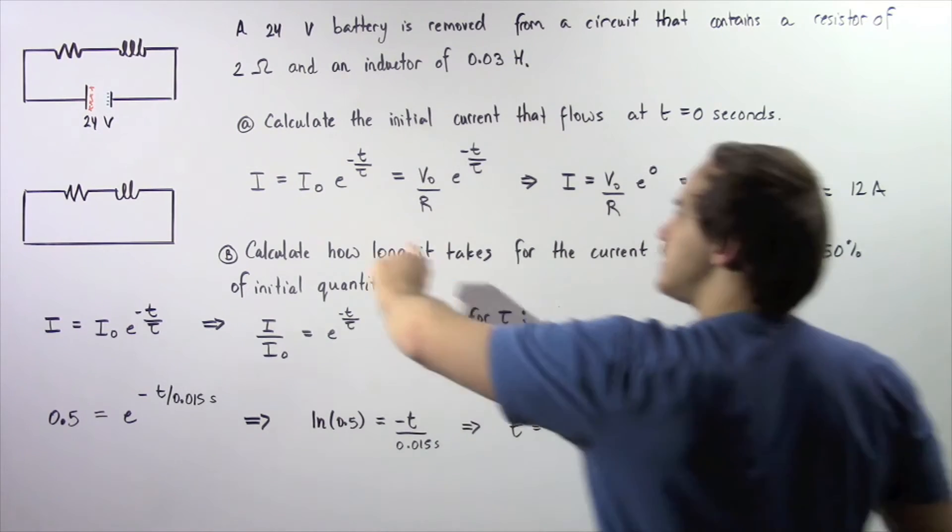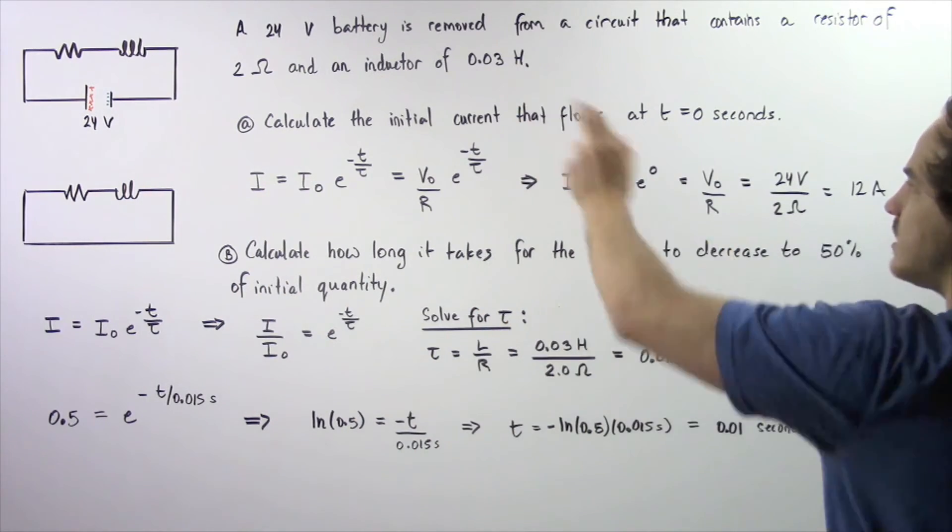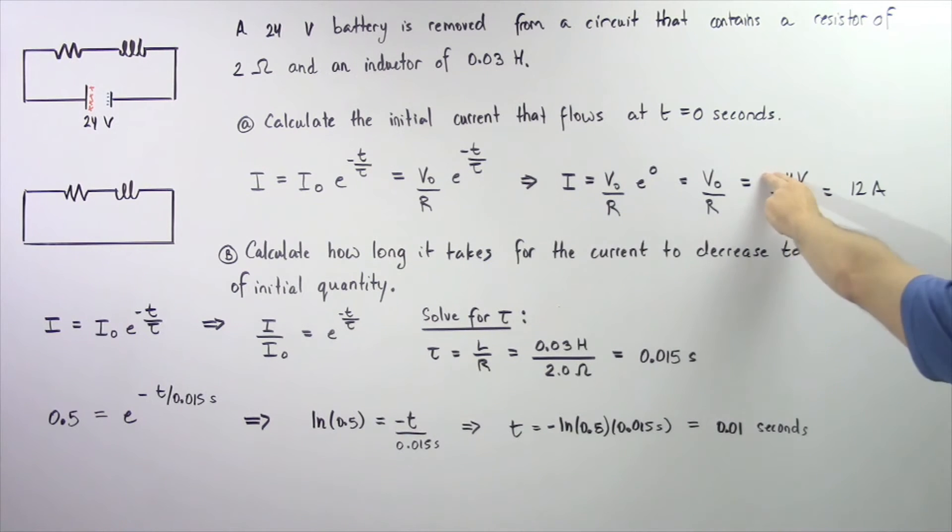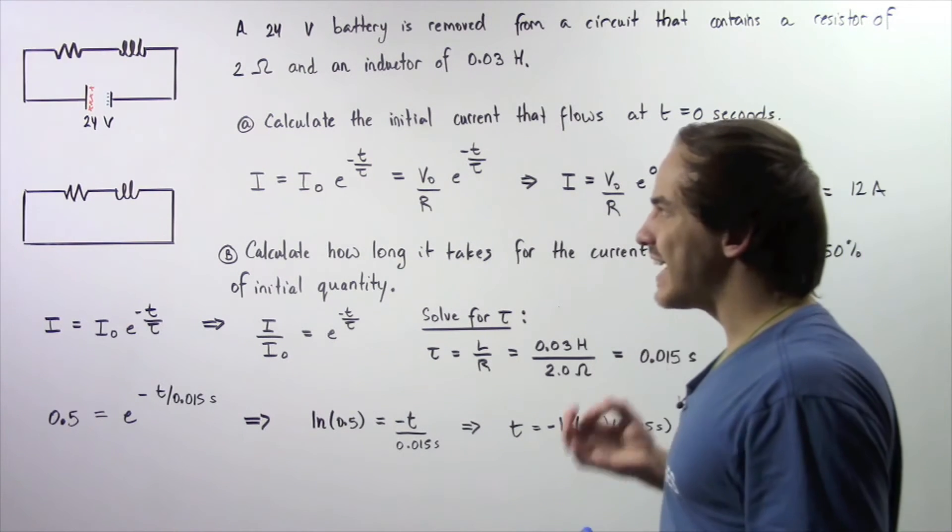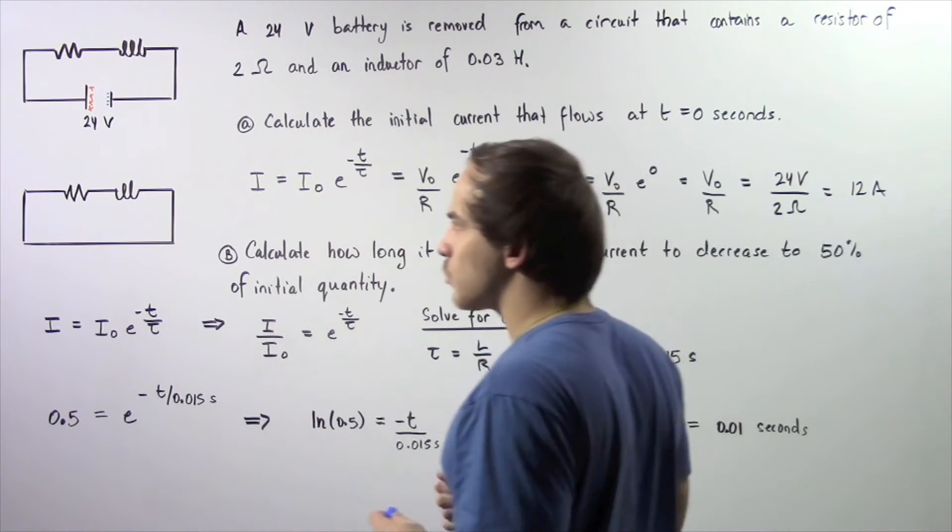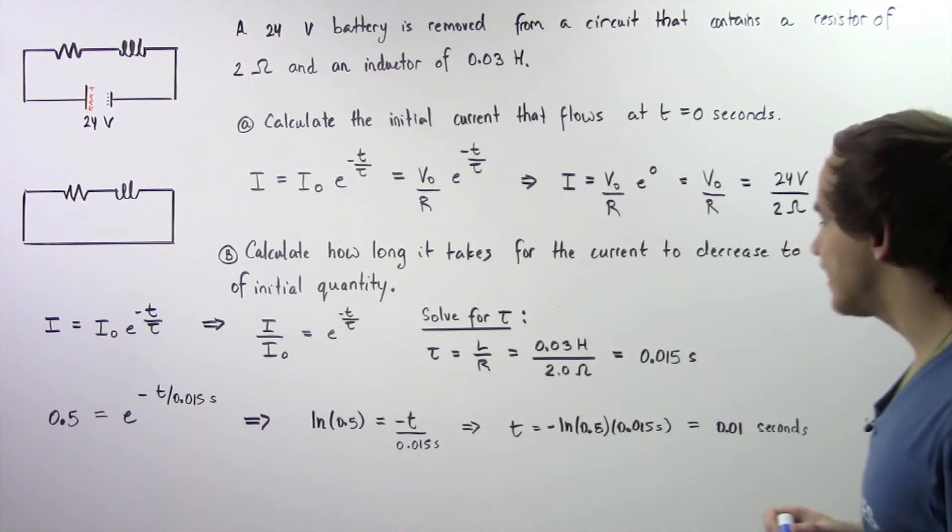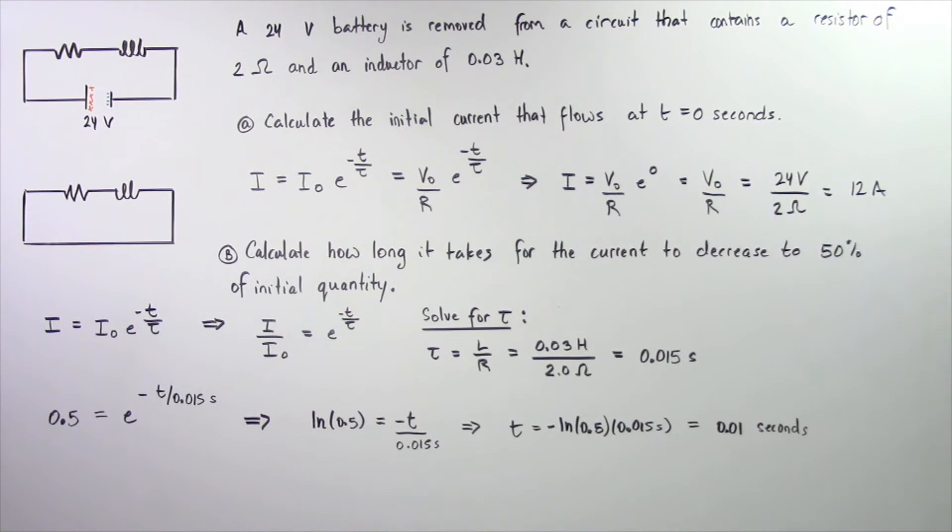V0 is given to be 24 volts and R is equal to 2 ohms. 24 volts divided by 2 ohms gives us an electric current of 12 amps. So our initial electric current when we remove our battery at time equals 0 seconds is equal to 12 amps.